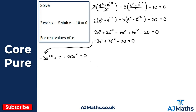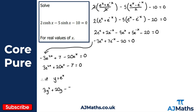We have a disguised quadratic. To make it easier I'll rearrange: taking minus 3e^(2x) to the other side gives 3e^(2x), and moving the other terms gives 3e^(2x) plus 20e^x minus 7 equals 0. Using the substitution y equals e^x, I obtain 3y² plus 20y minus 7 equals 0.